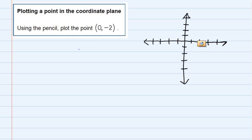The thing that we have to remember is that the first part of that coordinate pair tells us the left-right movement from the origin, and the second part, that second number, tells us the up-down movement from the origin.